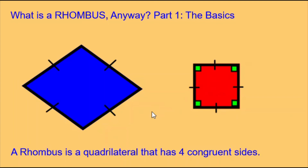You can also ask: is a rhombus a square? And of course, the answer is not necessarily. A rhombus has four congruent sides, which is necessary to be a square, but a rhombus does not have to have any internal 90-degree angles. At least one internal 90-degree angle is necessary for a shape to be a square.